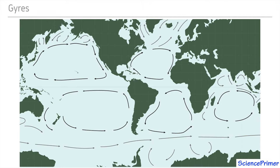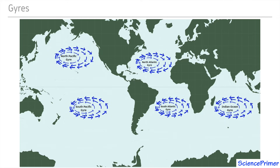A major feature of the current systems in all of Earth's large ocean basins is a central gyre. These gyres move water near the surface in large, roughly circular patterns around the center of each ocean basin.